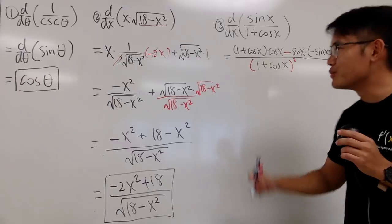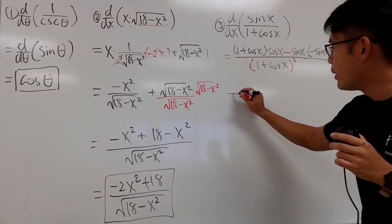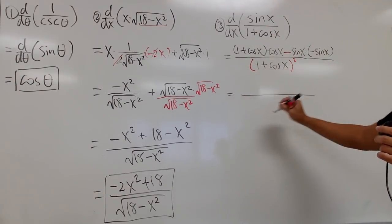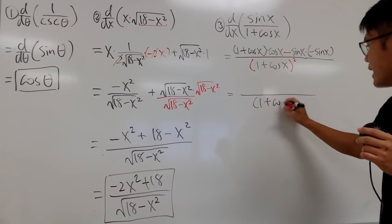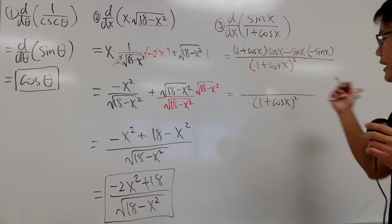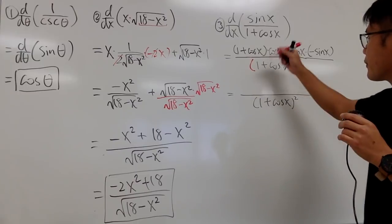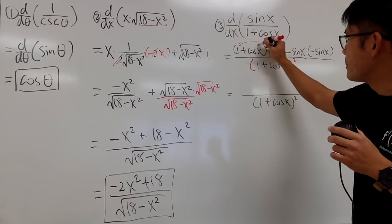And, now, that's how we construct the quotient rule for this derivative. And, now, let's simplify the top. The bottom stays the same for now. So, let me just write it down. 1 plus cosine x squared like this. On the top, of course, you can draw the arrows to make yourself happy, and things like that.